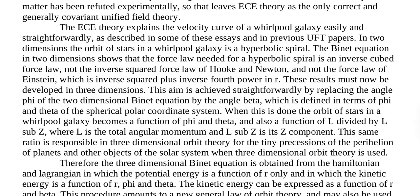This aim is achieved straightforwardly by replacing the angle Phi of the two-dimensional Binet equation by the angle Beta, which is defined in terms of Phi and Theta of the spherical polar coordinate system. When this is done, the orbit of stars in a whirlpool galaxy becomes a function of Phi and Theta, and also a function of L divided by L sub Z, where L is the total angular momentum and L sub Z is its Z component. This same ratio is responsible in three-dimensional orbit theory for the tiny precessions of the perihelion of planets and other objects of the solar system.